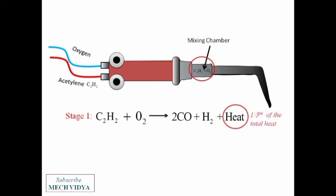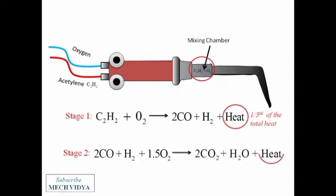After this stage, in the second stage, when these reactants come out of the nozzle tip and react with atmospheric oxygen, carbon dioxide and water vapor are produced along with additional heat. This heat accounts for around two-thirds of the total heat produced in the entire process.